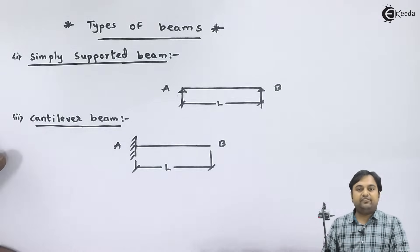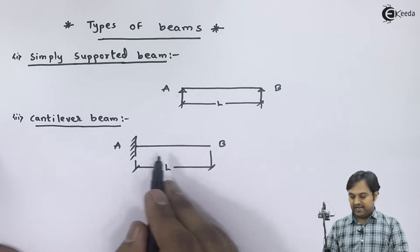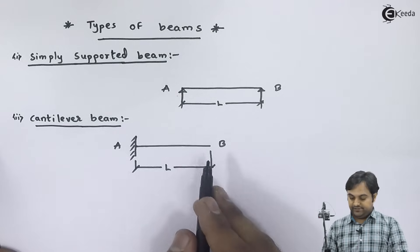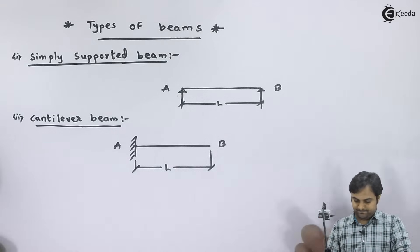If we have a beam which is fixed at one end and free at the other end, that beam is called a cantilever beam.